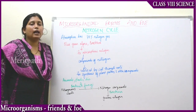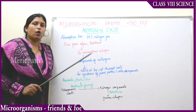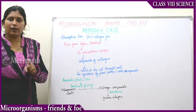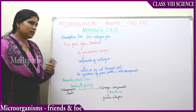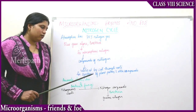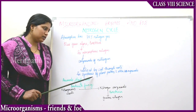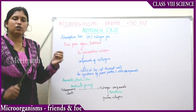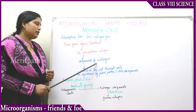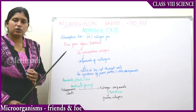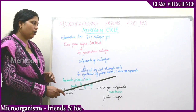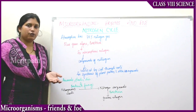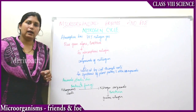Atmospheric nitrogen, with the help of bacteria and blue-green algae, will be converted into compounds of nitrogen. These compounds of nitrogen will then be absorbed by the soil through the roots and transported to all parts of the plant, where they are utilized for the synthesis of plant proteins and other compounds.